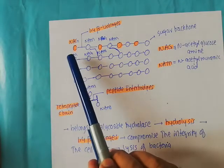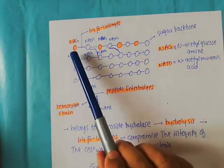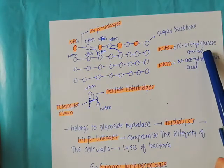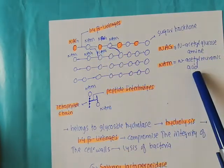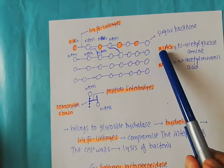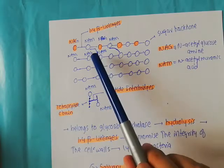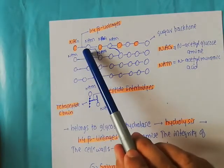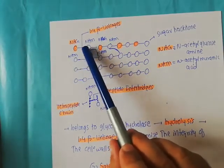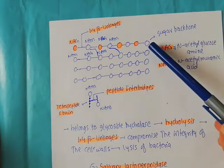The peptidoglycan structure is made of a sugar backbone. The sugars found in the peptidoglycan layer are NAG, which is N-acetyl glucosamine, and NAM (referred to as NIME), which is N-acetyl muramic acid. These two sugars make up the sugar backbone of the peptidoglycan layer. NAG and NAM are connected to each other by 1-4-beta linkages, which provide structural stability to the peptidoglycan layer.